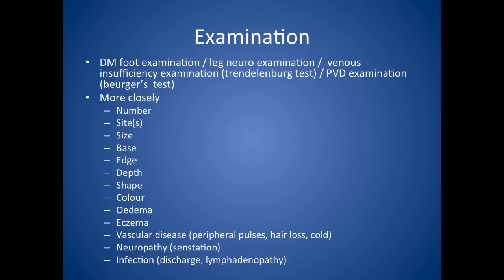You'd also want to think about a peripheral vascular disease examination and use a Buerger's test. A Buerger's test tells you about the Buerger's angle — the angle to which the leg has to be raised before it becomes pale. In a limb with normal circulation, the toes stay pink even when raised 90 degrees, but in an ischaemic leg, elevation to 15 or 30 degrees for 30 to 60 seconds may cause pallor. A vascular angle of less than 20 degrees would indicate severe ischaemia.